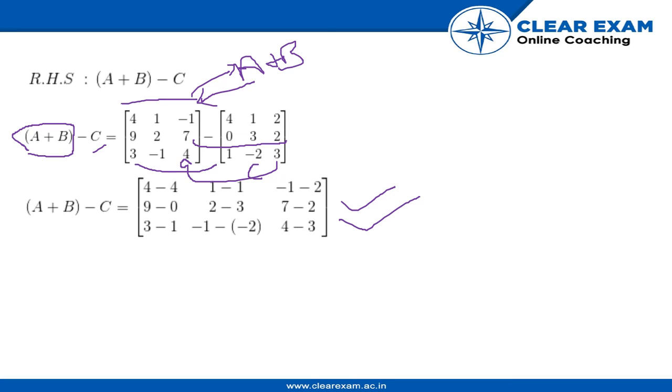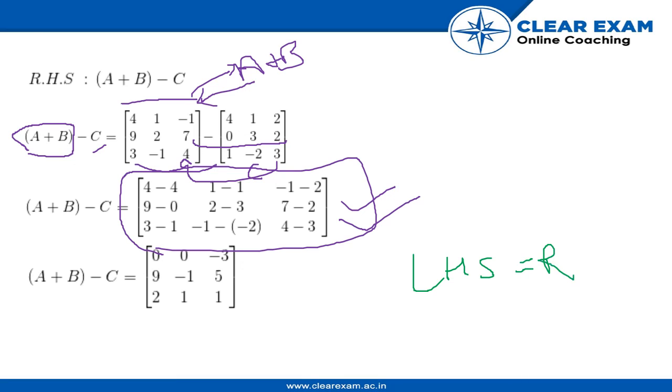So we get something as this thing. We will simplify the matrix and we get our final RHS part as zero, zero, minus three, nine, minus one, five, two, one, one. And we see that LHS is equal to RHS. I kindly request you to move back in the video and look at the LHS and then look at the RHS and you will find that LHS is equal to RHS.